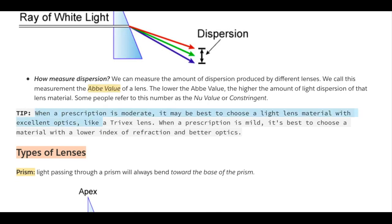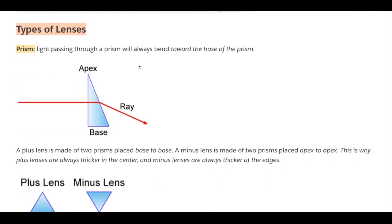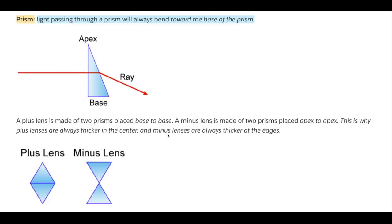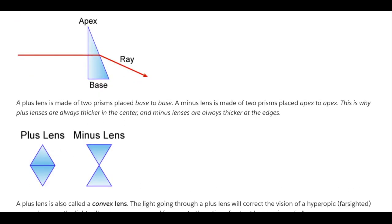Now let's move on to types of lenses. Prism is a big one — light passing through a prism will always bend toward the base of the prism. The apex is at the top and the base is at the bottom. A plus lens is made up of two prisms placed base to base, and a minus lens is made up of two prisms placed apex to apex. This is why plus lenses are always thicker in the center and minus lenses are always thicker at the edges.